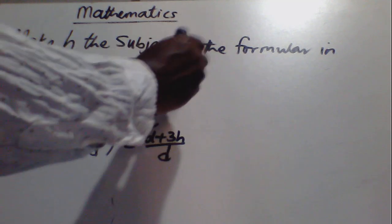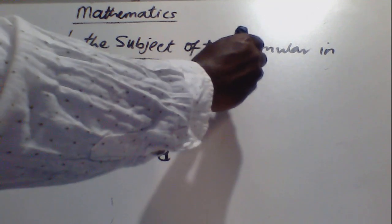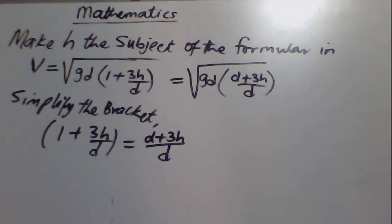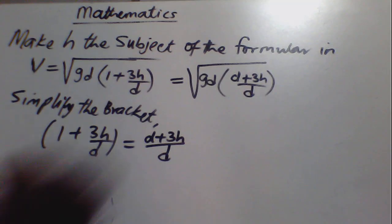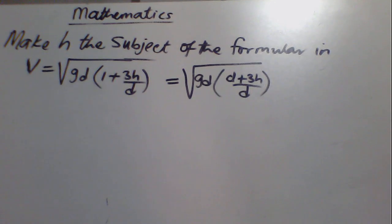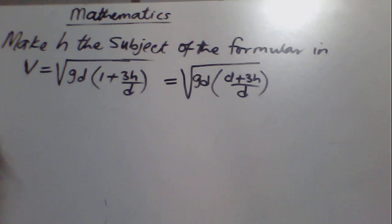So this term is equal to the square root of gd in bracket d plus 3h divided by d. The next thing you have to do, once you get to this point, is to multiply everything in the bracket with gd.